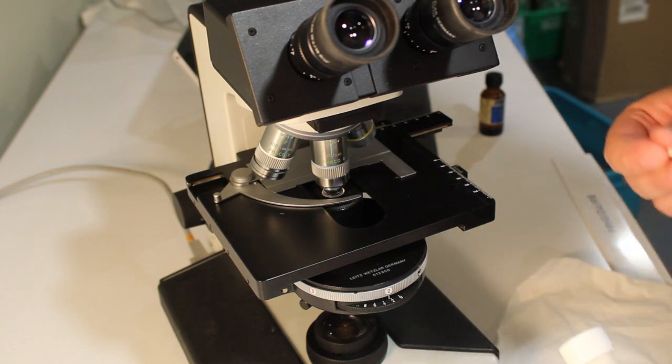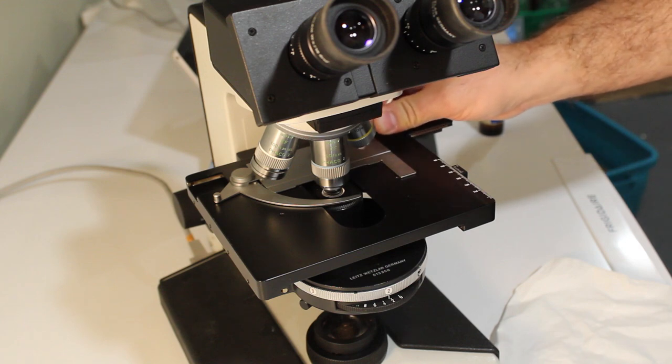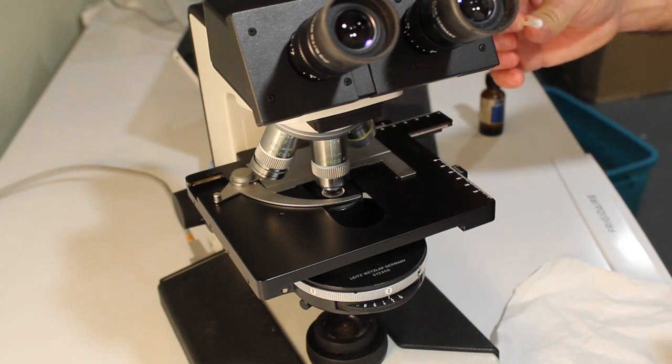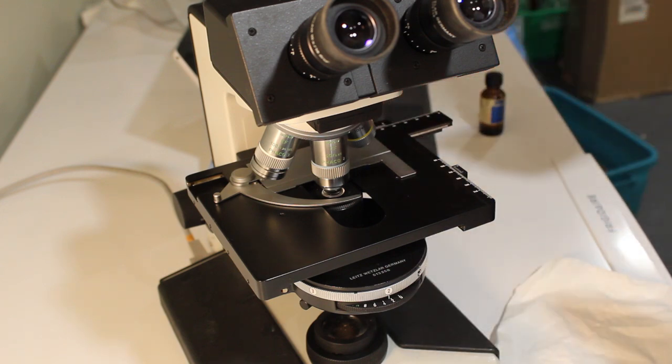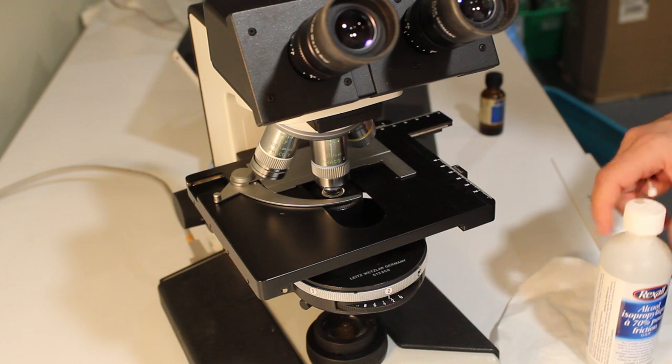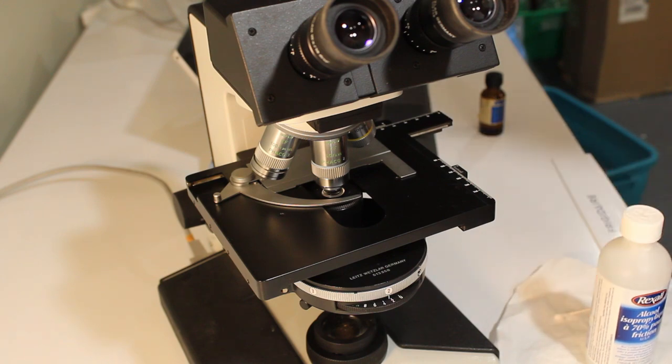Once you've cleaned as much oil off as you can with the tissue, wet a Q-tip with isopropyl alcohol, and use that to wipe the lens clean of any additional oil, and then dry it with the other side of that Q-tip. This will save your lens and prevent you from having to replace what can be a very expensive part of your microscope.